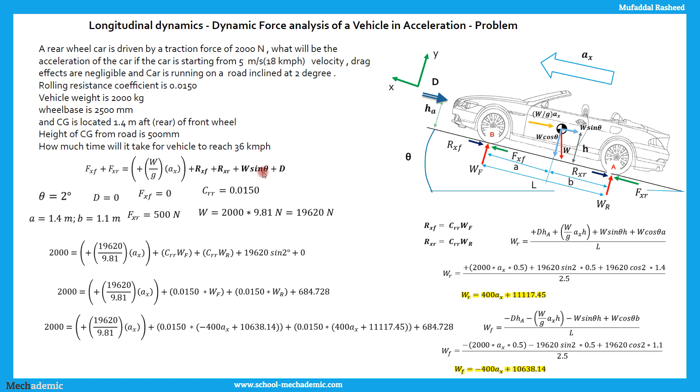And also, sin theta is known, sin 2. W is known, D is 0, replacing all the other terms. So on further simplification, we get this final line over here. All terms are in terms of Ax, then finally we can find the Ax value.